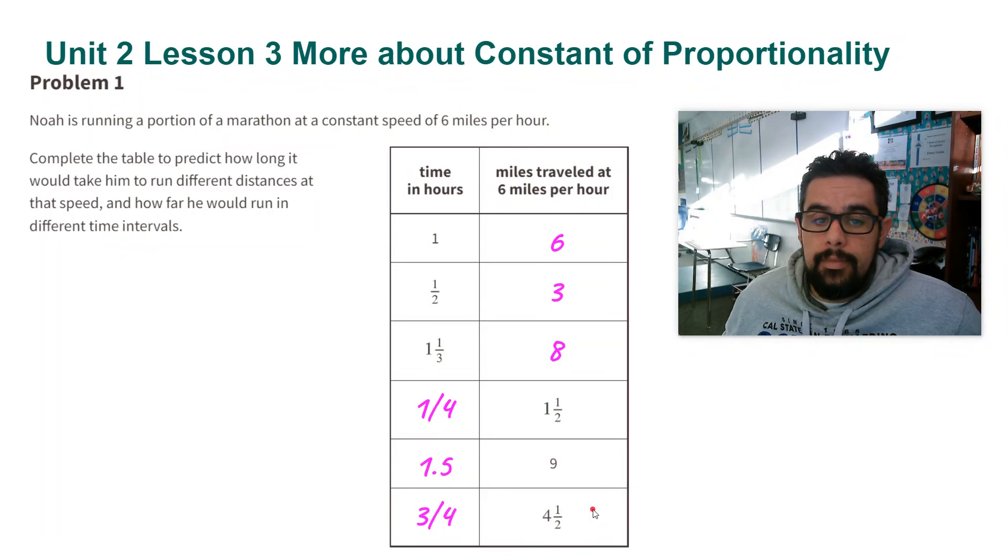So I'm using the constant here to find the missing numbers in the table. Finding the number of miles, I multiply by 6. Finding the number of hours, I divide by 6. Thank you ladies and gentlemen.